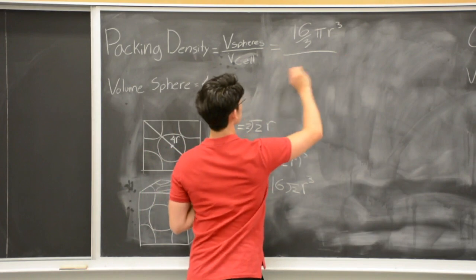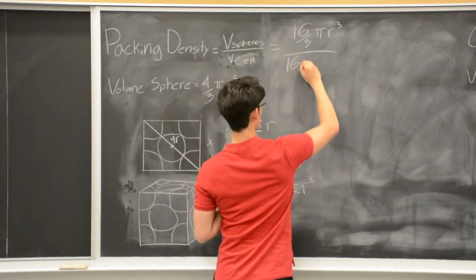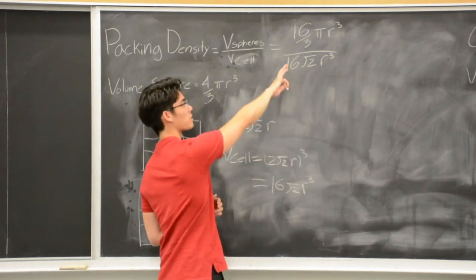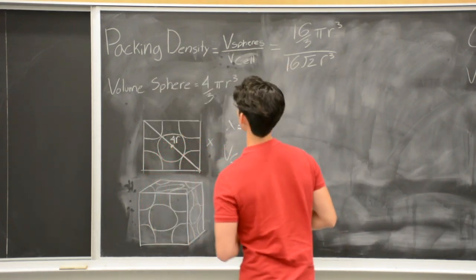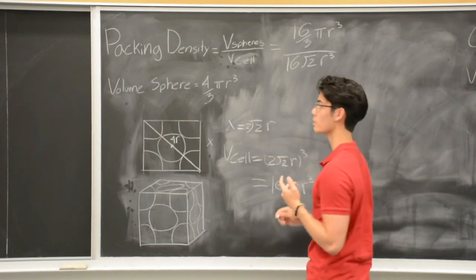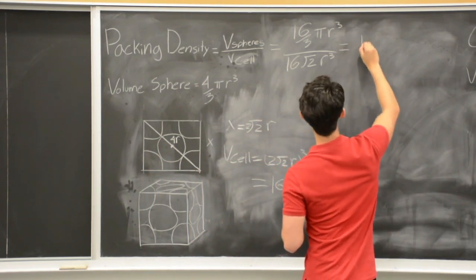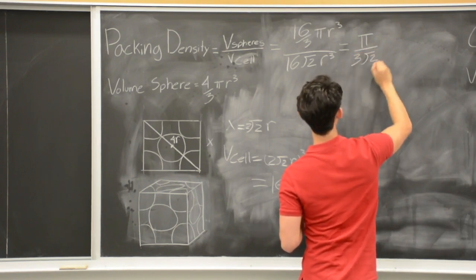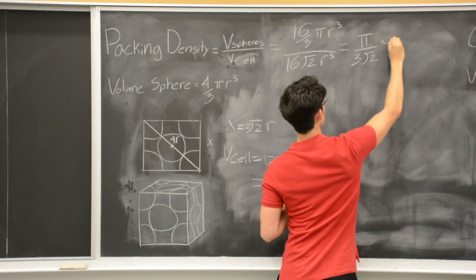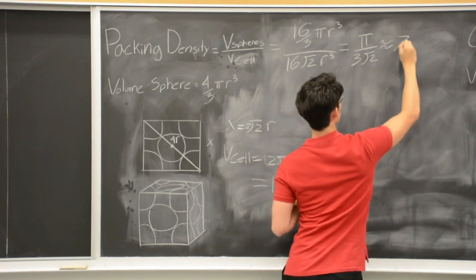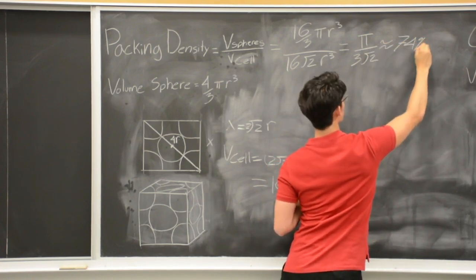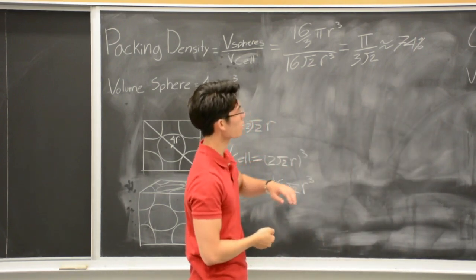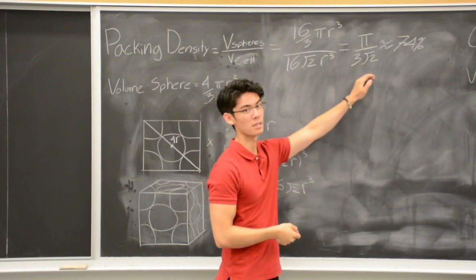Summing it back in. Notice we can cancel out some terms. And therefore, the packing density of the cubic arrangement is equal to π/(3√2), which is about 74%. And as Kepler claims, there is no other arrangement that provides a better packing density than this.